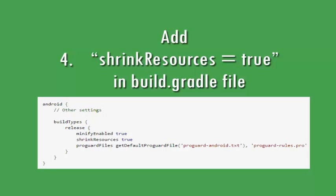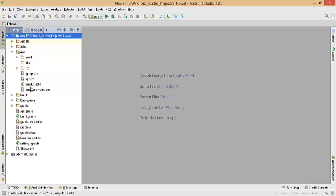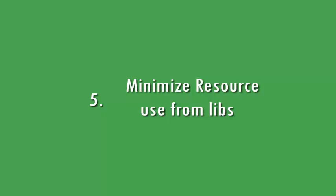The fourth point: add shrinkResources in your build.gradle file. To use shrinkResources you must enable code shrinking during the build process. First, ProGuard removes unused code but leaves unused resources, then Gradle removes the unused resources. Go to the app's build.gradle file and add shrinkResources true.